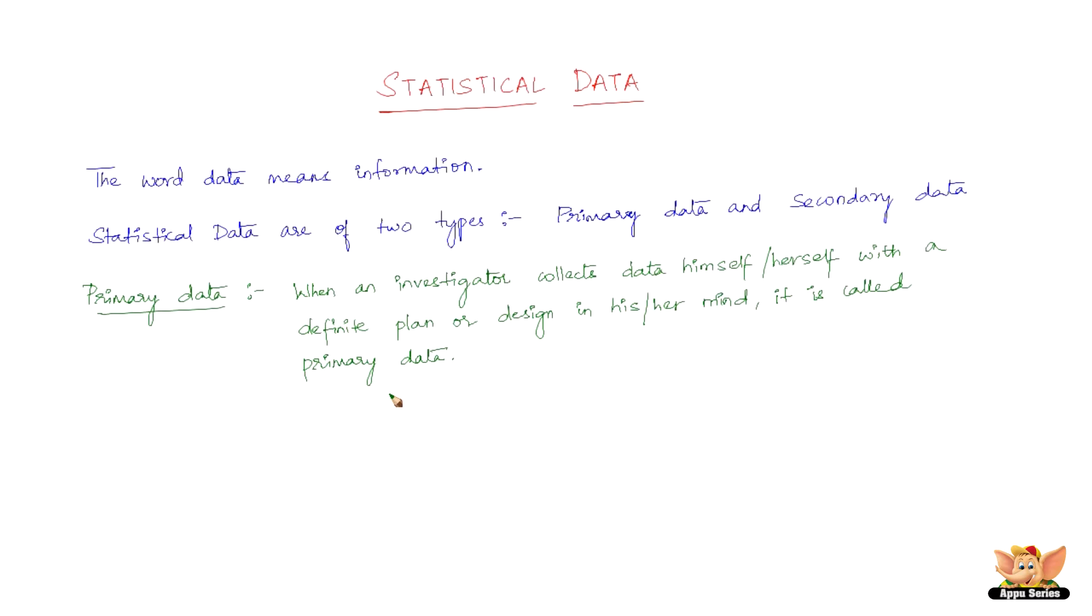Now primary data are reliable and relevant because they are original in character and are collected by some individuals or by some institutions or by research bodies. For example, data obtained in population census by the offices of Registrar General and Census Commissioner or a Ministry of Home Affairs. Now these are all primary data.